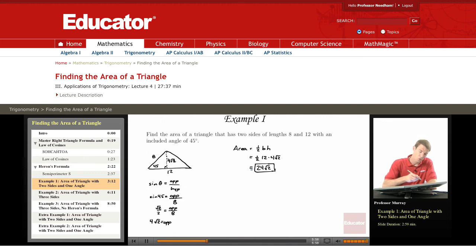But in this one, we just drew this altitude, we used SOH CAH TOA to find the length of the altitude, and then we used the old-fashioned geometry formula, 1/2 base times height, to get the area of the triangle.